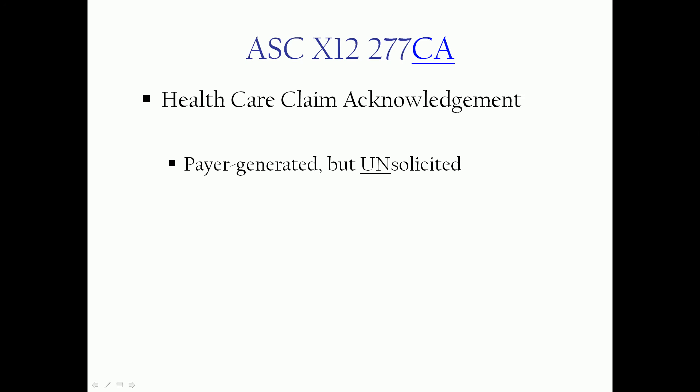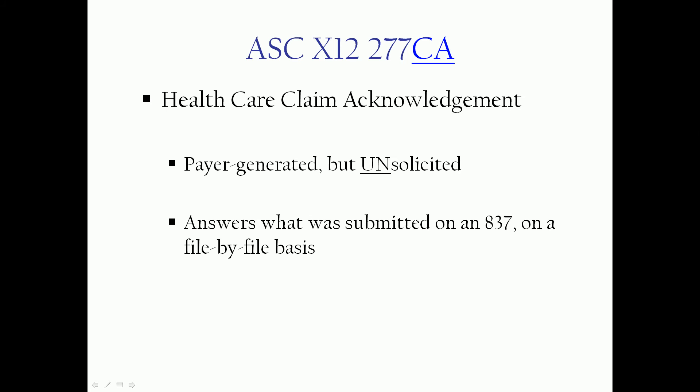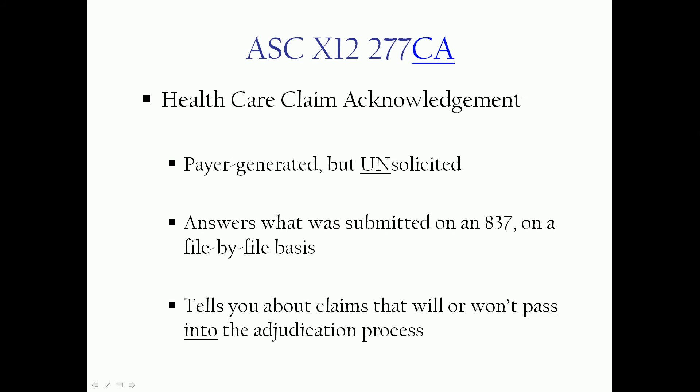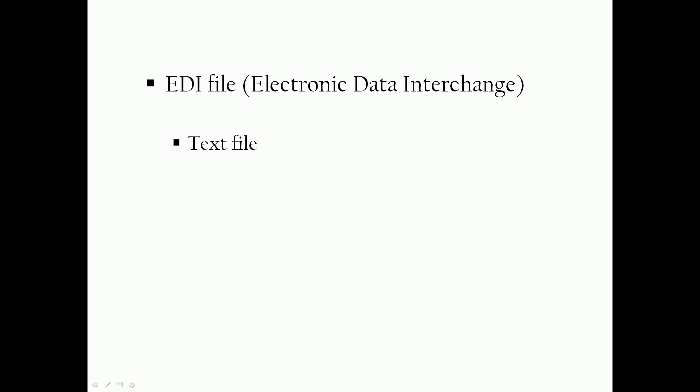The 277 CA is a healthcare claim acknowledgement — a different point in the process. It is also payer generated, but it's unsolicited. You don't have to ask for it; if your trading partner participates in this process, you will get it unsolicited. It answers what was submitted on an 837 on a file-by-file and claim-by-claim basis, and it tells you about claims that will or will not pass into the adjudication process. All these files are EDI files — Electronic Data Interchange — a format that has been in operation probably since the 1950s, originating in mainframe computing in the insurance industry.